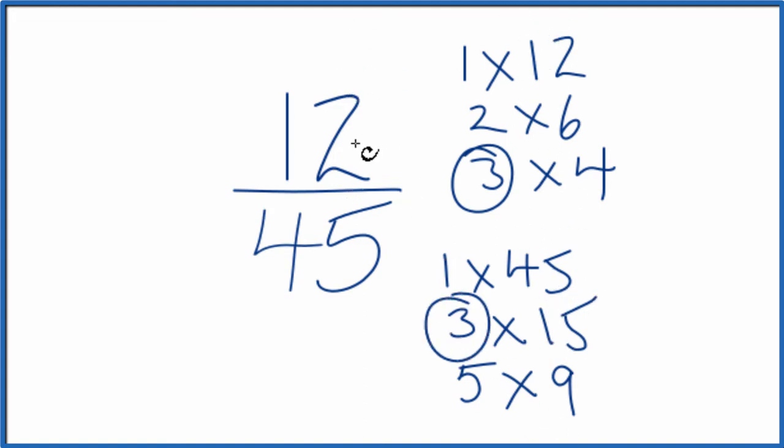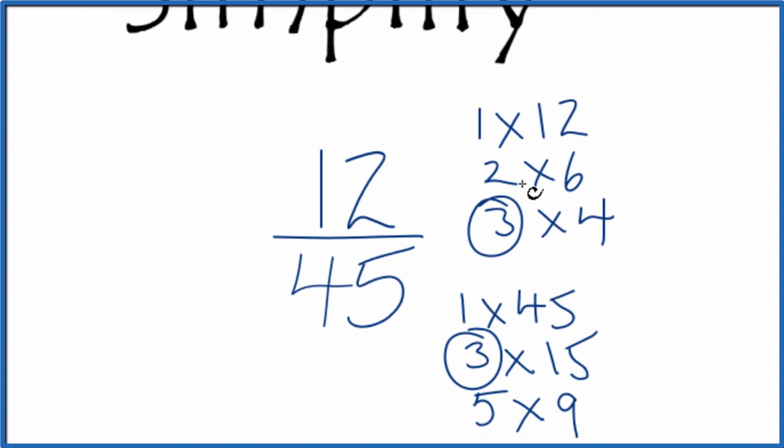So we're going to divide 12 by three and 45 by three, and we'll have simplified the fraction 12 over 45. Let's move these over here.